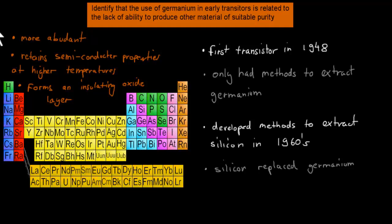Now the first transistor was made in 1948, and that was made with the use of germanium as its core. One of the reasons why is because the only method we had was really to extract germanium. We need to have a very pure crystal, and we couldn't make silicon in such a pure crystal.